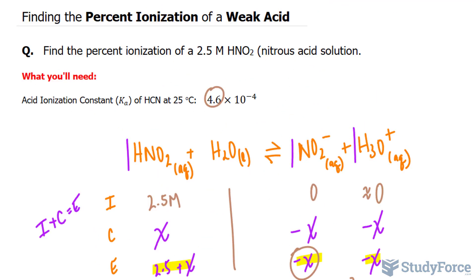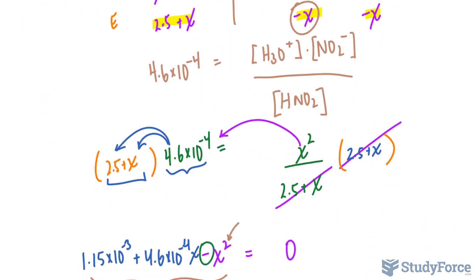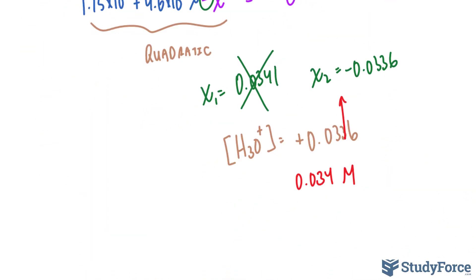Now, the purpose of this exercise was to find the percent ionization. So at this point, you take this number and you divide it by the initial concentration of the acid. And that was given in the question as 2.5 molar.